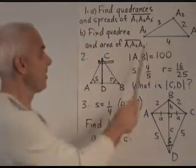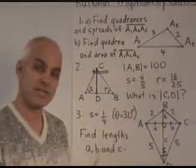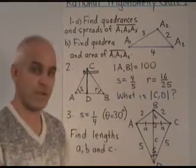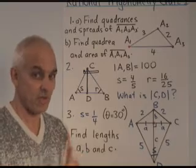OK, first problem. We have a triangle whose side lengths are 4, 3, and 2. These are lengths, not quadrances.